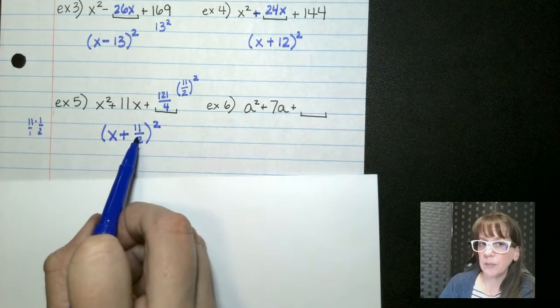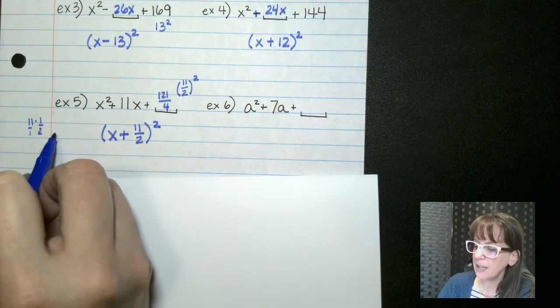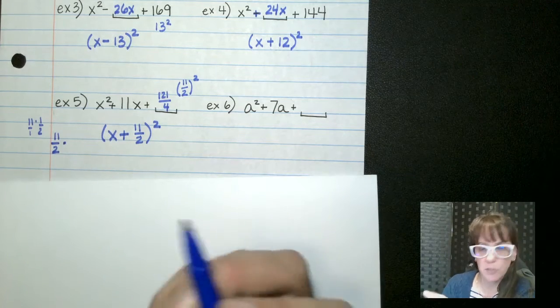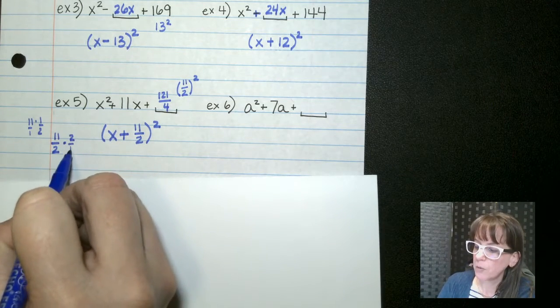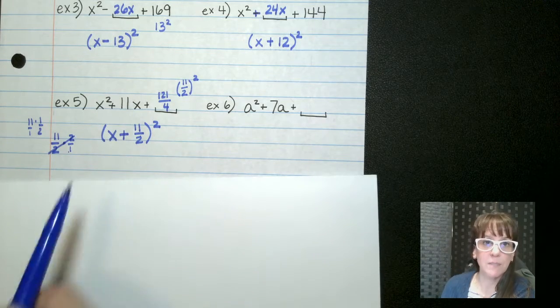Now, let's double check. Remember, this times this is 11 halves, and then double it. So if we take 11 halves, a little more side work over here, double it, doubling something is just multiplying by two over one. These guys cancel out, and I'm left with 11 over one, or 11. So we've done that correctly.